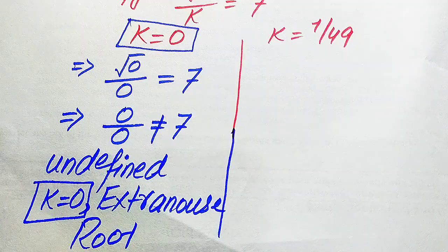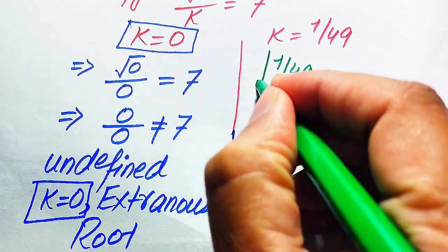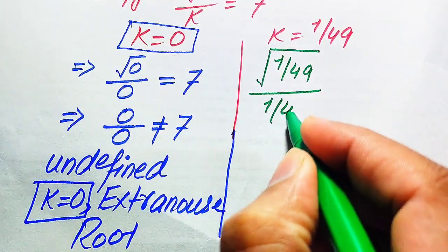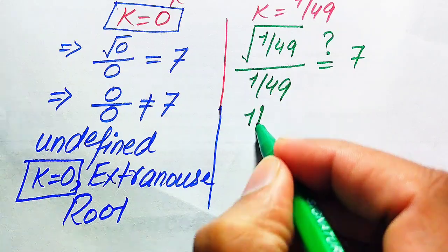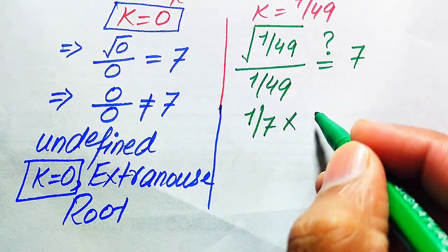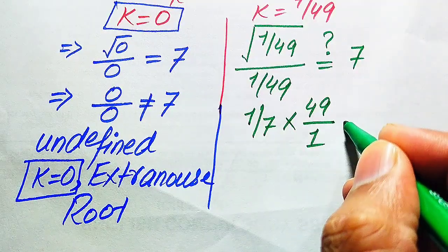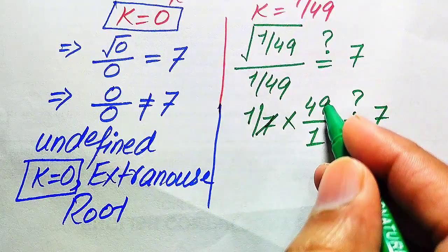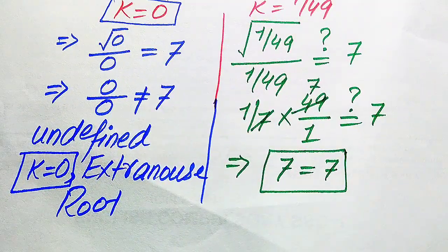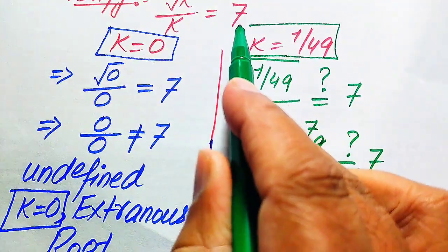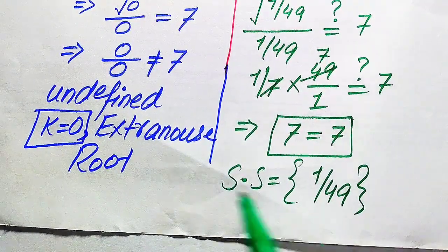Now we verify the second root by substituting k equals 1/49 into the left-hand side. We get square root of (1/49) divided by (1/49). The square root of 1/49 equals 1/7. Then (1/7) divided by (1/49) becomes (1/7) times 49, which equals 7. Since 7 equals 7, the value k equals 1/49 satisfies the given equation, and the solution set is {1/49}.